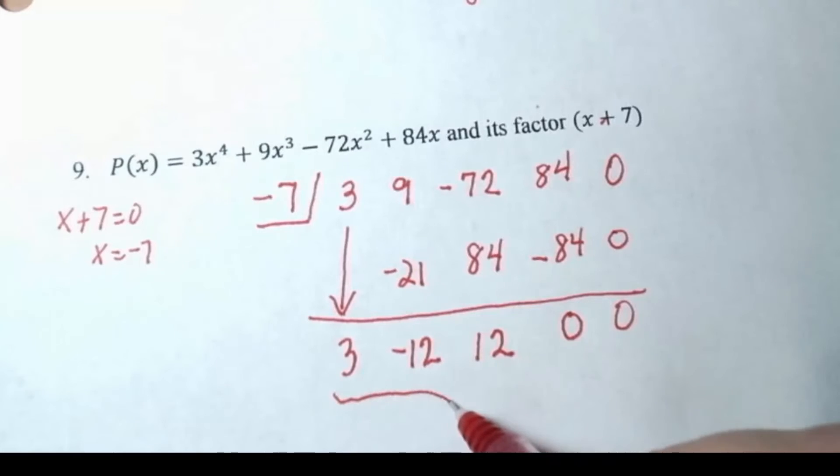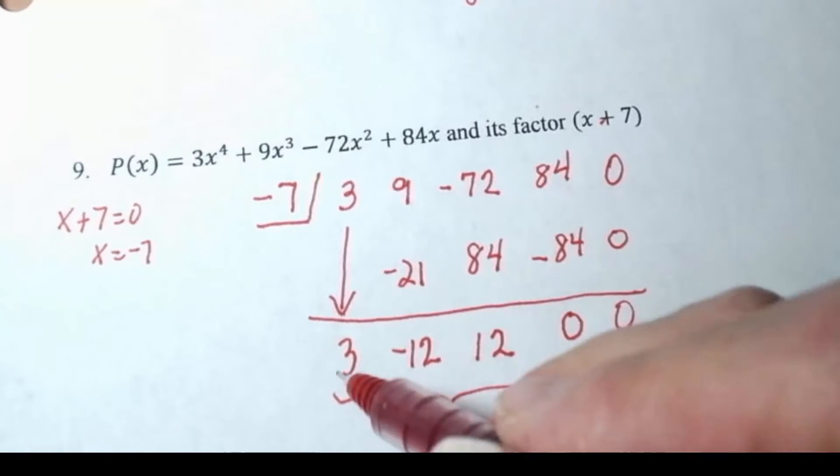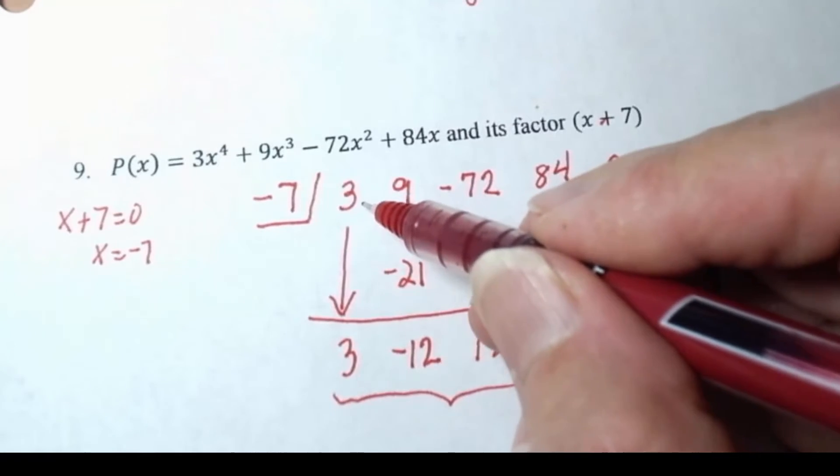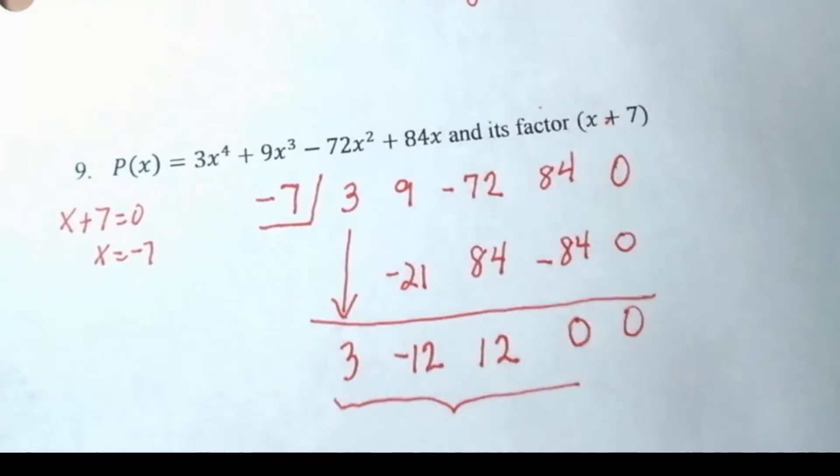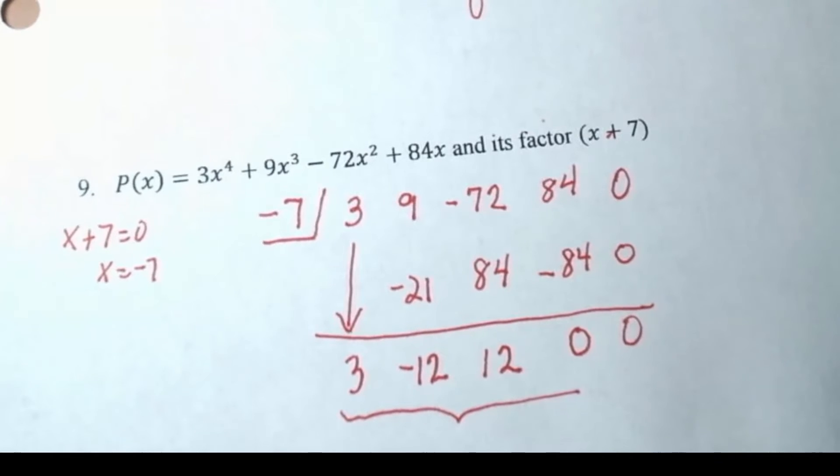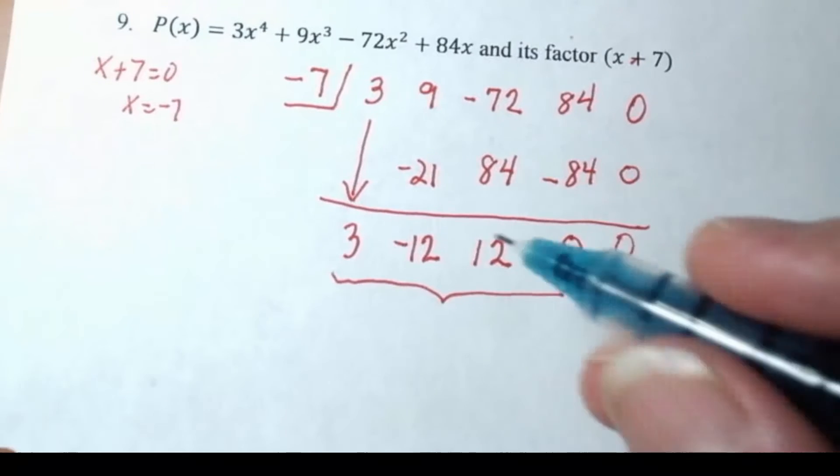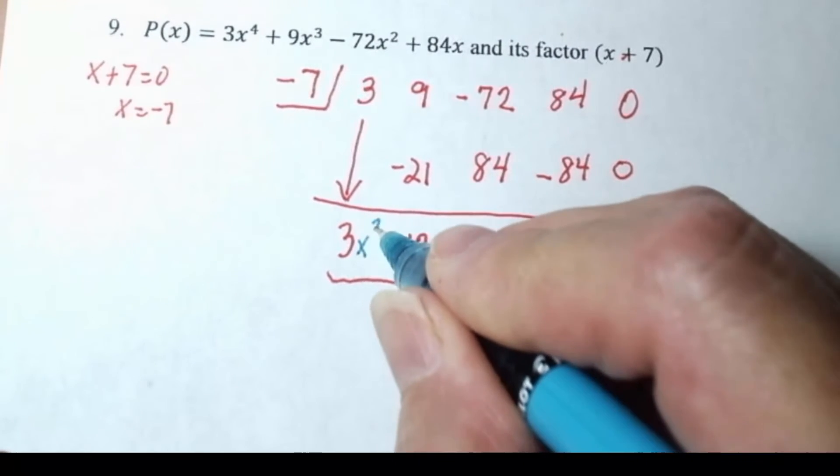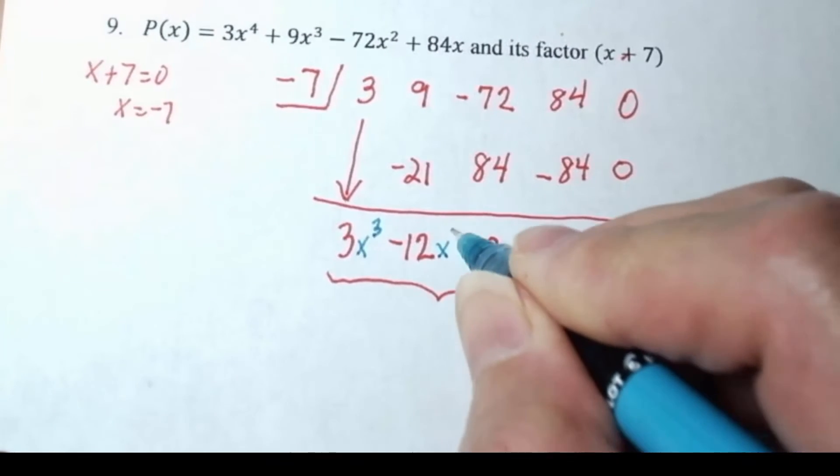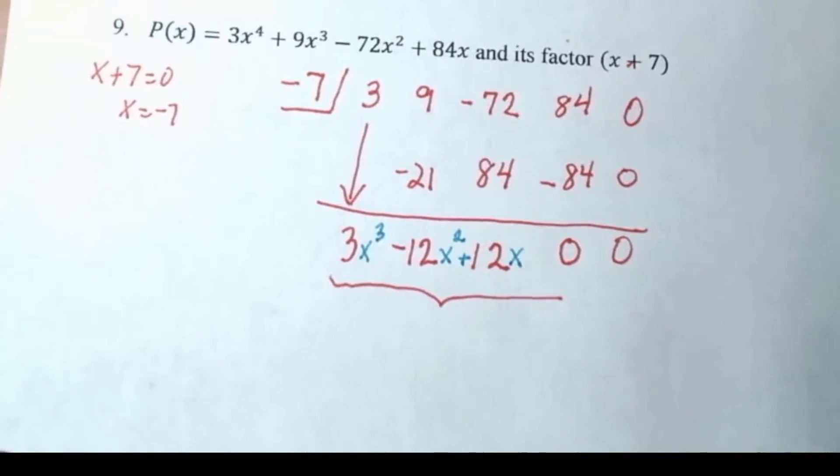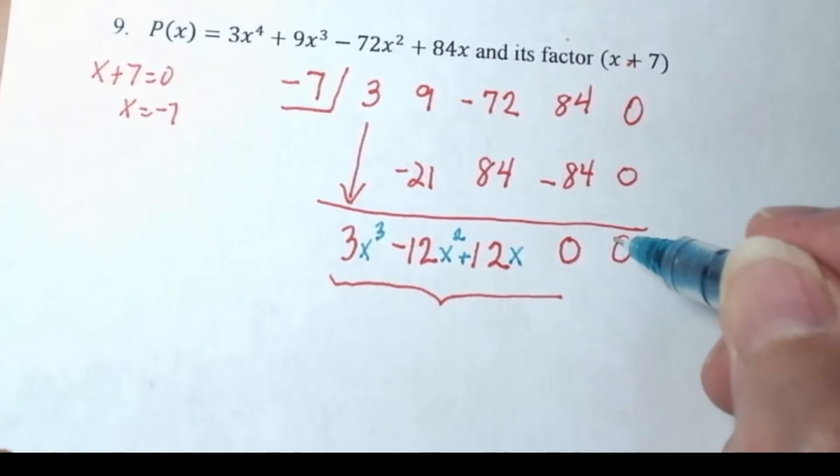This cubic, now remember, even though there's only three coefficients, you go down one degree, so this was an x to the fourth, this coefficient belongs to x to the third. So we're going to write three x cubed minus 12 x squared plus 12 x. You don't have to write plus zero, but it is implied because this is your remainder. This last number is the remainder.